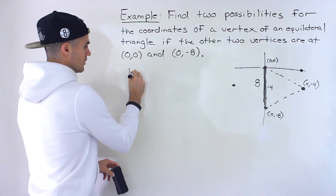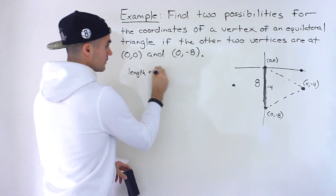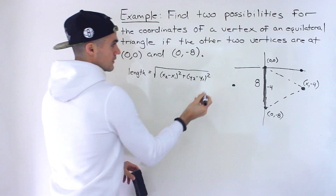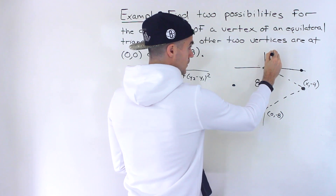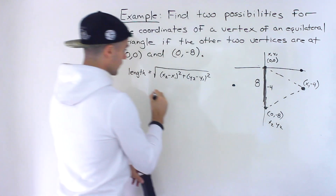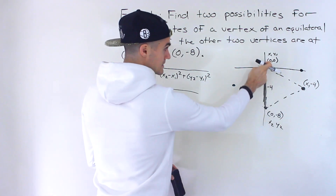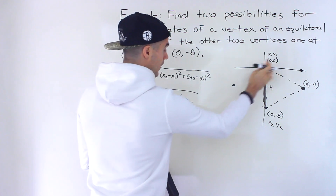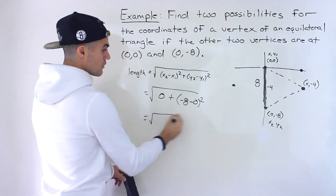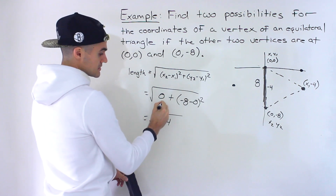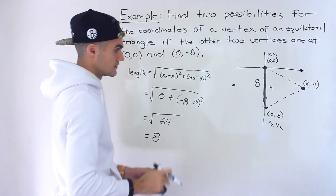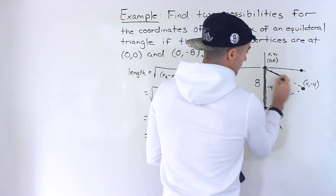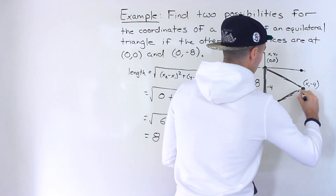If you wanted to do the full work without just looking at it, you can use the length formula. So we would have zero and zero, and zero and negative eight. We'd have x₁, y₁ and x₂, y₂. What would happen here is we'd have x₂ minus x₁: zero minus zero squared, that's just zero. And then we'd have y₂, negative eight, minus y₁ which is zero, and that would be squared. So we'd end up with negative eight to the power two, which is just 64, and then the square root of 64 is eight. So this length over here is eight, which means if it's going to be an equilateral triangle, this length over here has to be eight, and this length over here has to be eight.